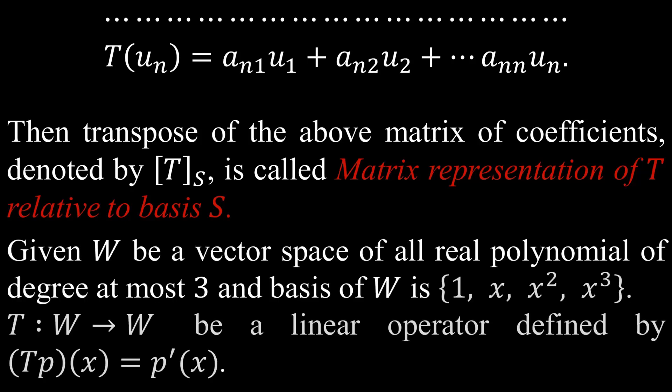Given: W is the vector space of all real polynomials of degree at most 3, and the basis of W is {1, x, x², x³}. T: W → W is a linear operator defined by T(p(x)) = p'(x).